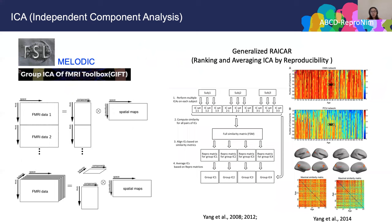Nowadays, the tools to perform ICA are pretty well developed. For example, MELODIC from the FSL group and GIFT from another group. ICA is not only useful for identifying networks but also used to identify noise components from motion and respiration. But when we apply ICA across individuals, we also need to pay attention to individual variation. Usually, group ICA assumes the group is homogeneous and all subjects share common components — however, this is not always true.